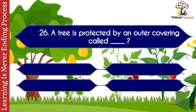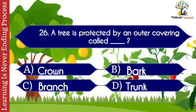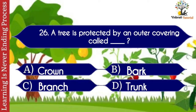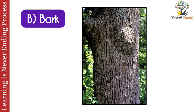Question number twenty-six: a tree is protected by an outer covering called dash. Options: A. Crown, B. Bark, C. Branch, D. Trunk. The correct answer is B. Bark. The tree is protected by an outer covering called bark.